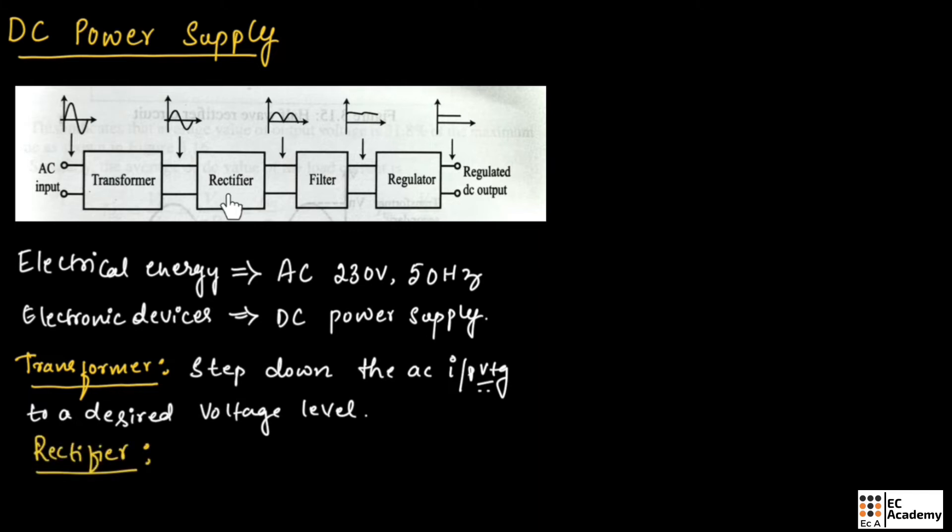The next block is rectifier. The function of rectifier is to convert AC into pulsating DC as shown in this figure. Here the output of rectifier is pulsating DC, which means this output consists of both AC component as well as DC component.